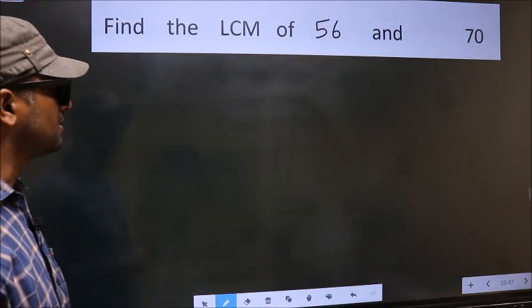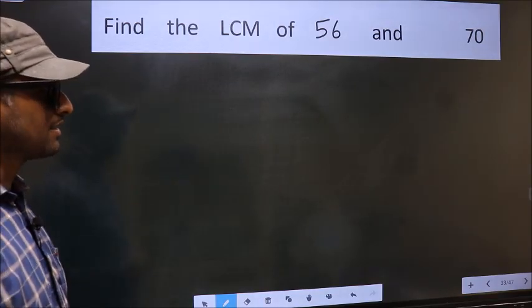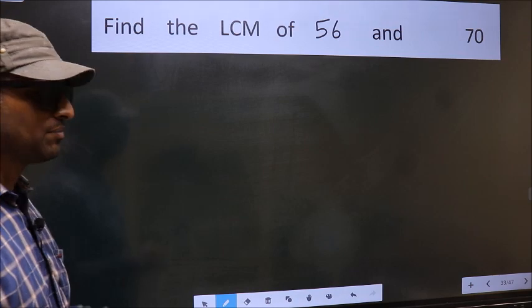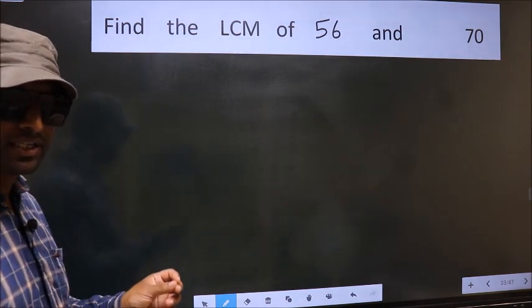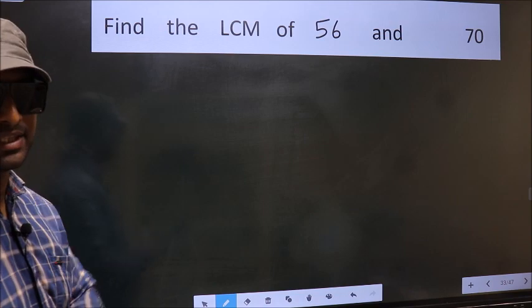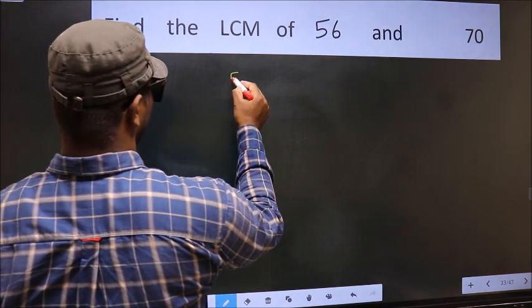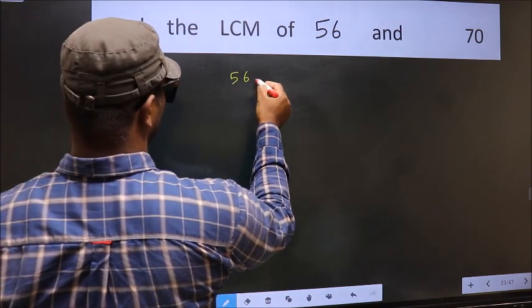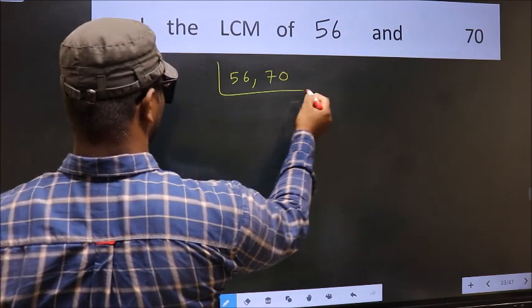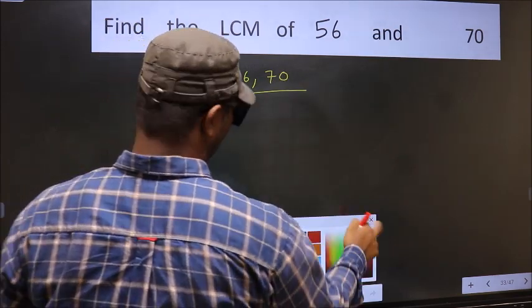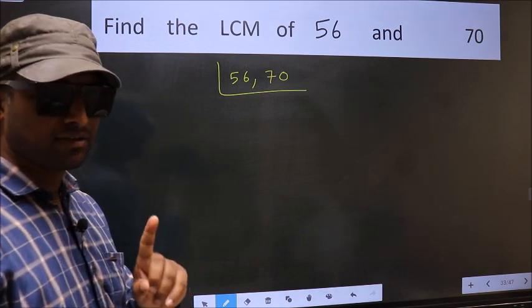Find the LCM of 56 and 70. To find the LCM, first we should frame it in this way: 56, 70. This is your step 1.